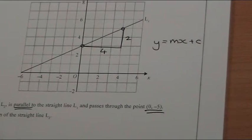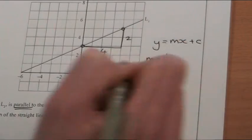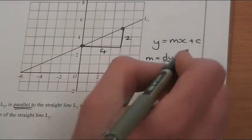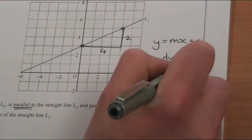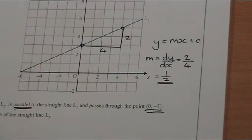Okay, so the gradient, if I put up here, m, is always the difference in the y-axis divided by the difference in the x-axis. D for difference. So it's 2 divided by 4, which you should know is a half in its simplest form.